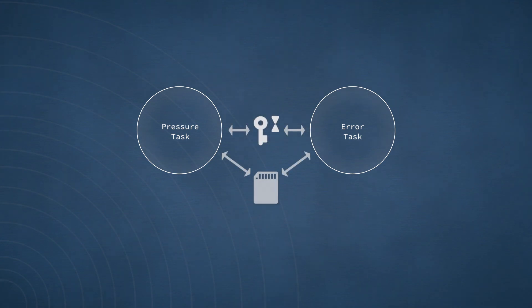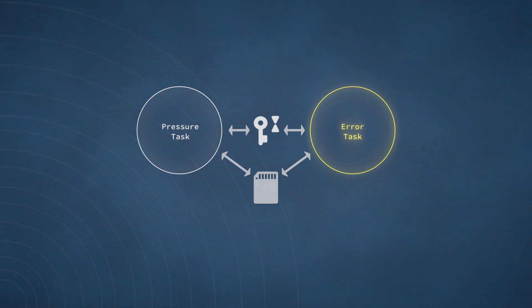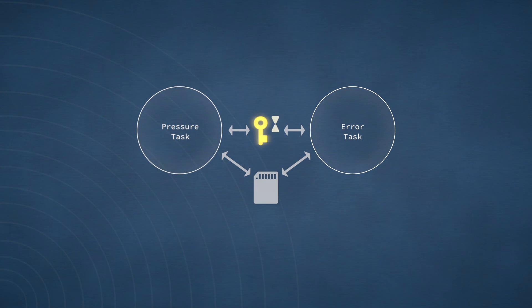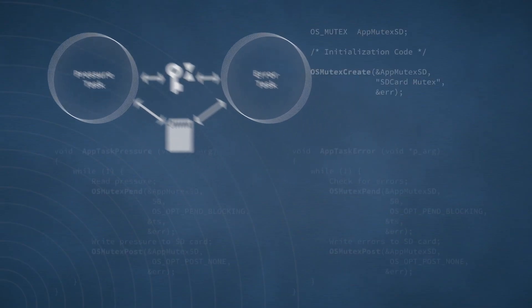Let's now take a look at an example that shows how our three mutex functions could be employed in the protection of a shared resource. Here, we have two tasks. One task is responsible for reading pressure values from sensors and then writing the values to an SD card. The second task has the job of reporting various types of error conditions, also to the SD card. The symbol shaped like a key indicates the mutex, and the hourglass symbol indicates that there is a timeout associated with the mutex. In this pseudocode snippet, you can see the initial declaration required for the mutex — it's an OSMutex structure named appMutexSD.